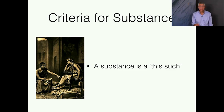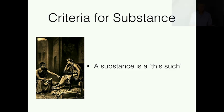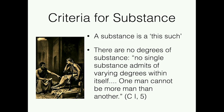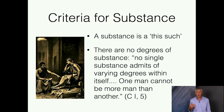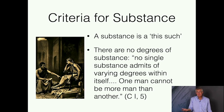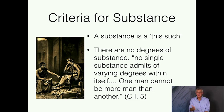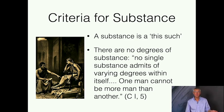I want to close by considering some criteria for substance. We've talked about one already: a substance is a this-such. There are no degrees of it — that's our second criterion. No single substance admits of varying degrees within itself. One man can't be more man than another. I'm a human being — can you talk about me being more or less human than someone else? No. We're all of the same kind. Can you talk about me being more Dan Bonnevac today than yesterday? No. A substance is the kind of thing that you are or you aren't. Either you're human or you're not. Either you're Dan Bonnevac or you're not.